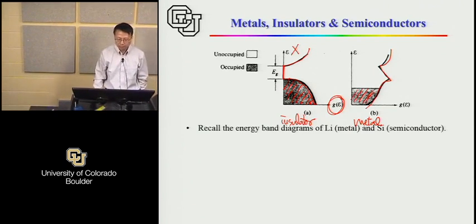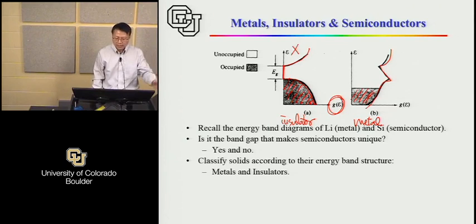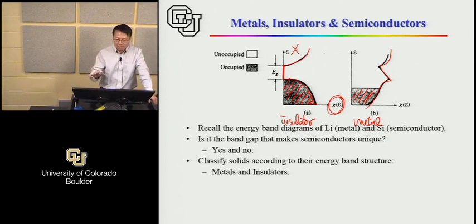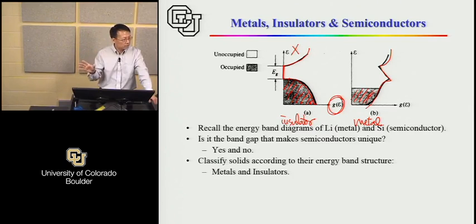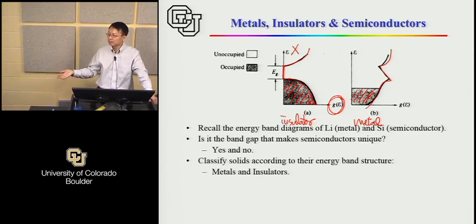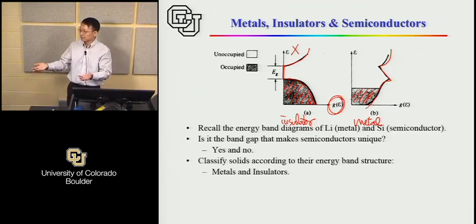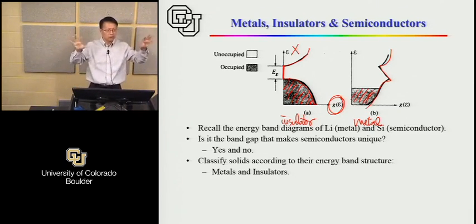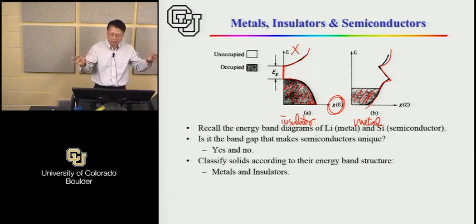Solids are classified based on their electrical conduction properties: good conductors and bad conductors — insulators. What distinguishes a metal from an insulator is not merely the existence of a band gap, but whether at zero Kelvin you have at least one partially filled band. A metal always has at least one partially filled energy band at zero Kelvin — that's what defines a metal.